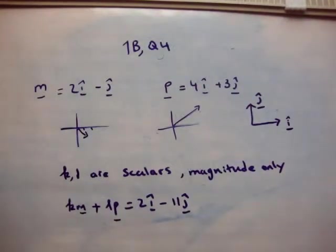Okay, in this video I'm going to continue on with exercise 1b, and I'm going to do question 4. So in question 4 you're given two vectors.